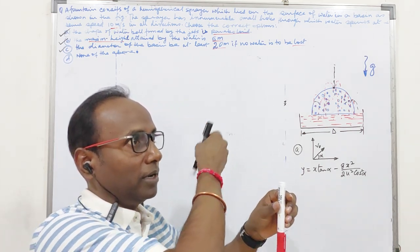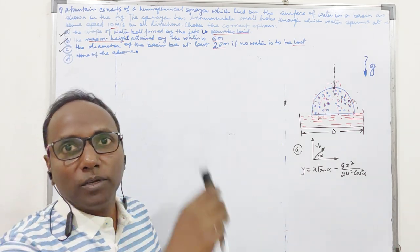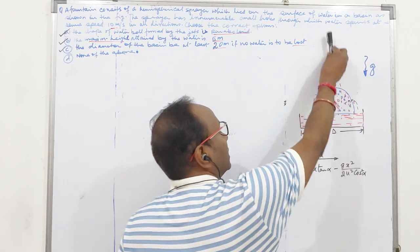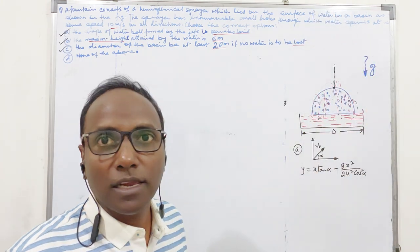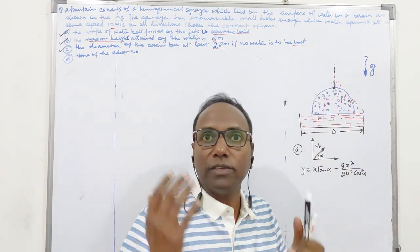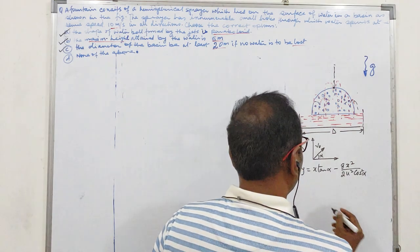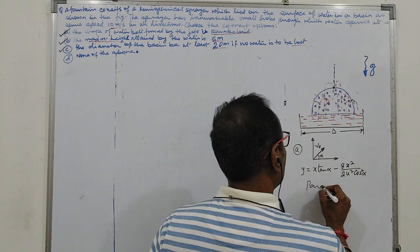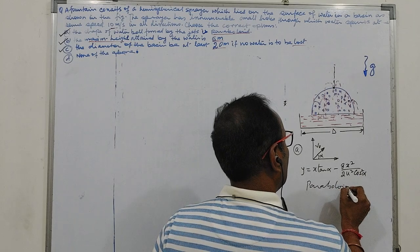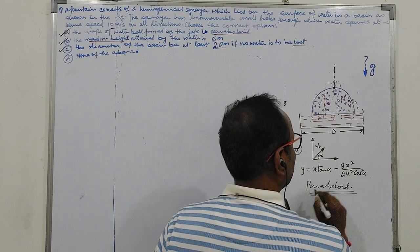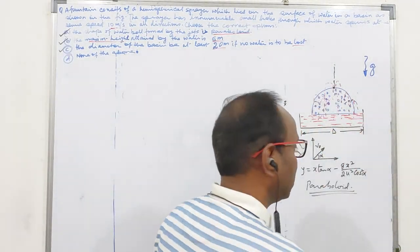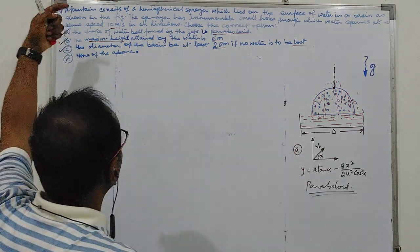Parabola, parabola, parabola, about its axis of symmetry. So finally, the surface what we will get is paraboloid, a three-dimensional surface. So what we will get is paraboloid. So answer A is correct.